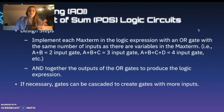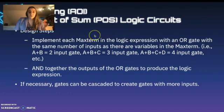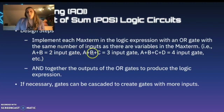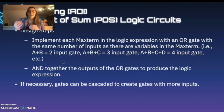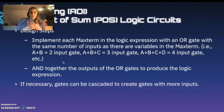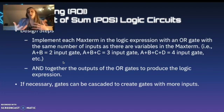Designing a product of sums logic circuit is really similar to an SOP. We implement each max term in the logic expression with an OR gate with the same number of inputs as there are variables in the max term — A or B is a two-input gate, A or B or C is a three-input gate, and so on. We then AND together the outputs of the OR gates to produce the logic expression. Think of POS as a flip or inverse of SOP: OR gates inside the max terms, and an AND gate at the end. If necessary, we can cascade gates when limited to two-input logic gates.